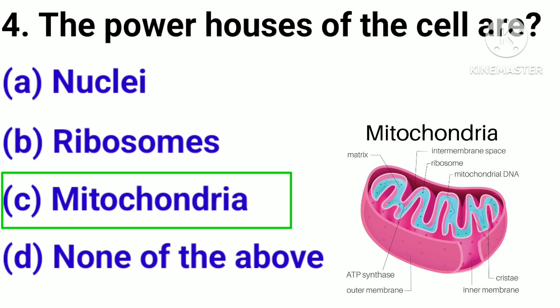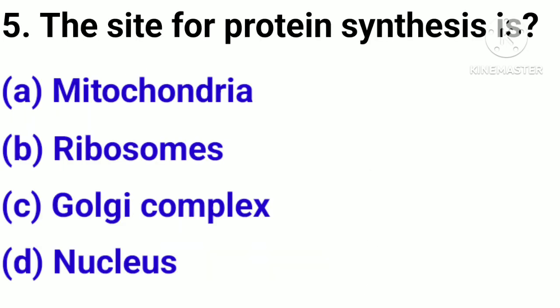Correct answer: option C, Mitochondria. Question number 5. The site for protein synthesis is: option A, Mitochondria; option B, Ribosome; option C, Golgi complex; option D, Nucleus.